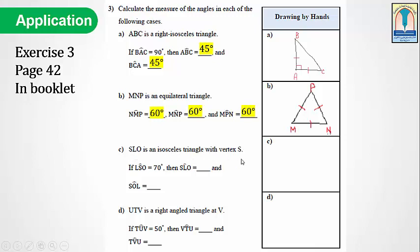C: SLO is an isosceles triangle with vertex S. If LSO equals 70 degrees, find the measure of SLO and SOL. We will draw this triangle with the principal vertex S. 70 degrees plus SLO plus SOL equals 180 degrees. So SLO plus SOL equals 180 minus 70 degrees, which is 110 degrees. But the two angles are equal base angles, so SLO equals SOL equals 110 degrees divided by 2. The measure of each angle is equal to 55 degrees.